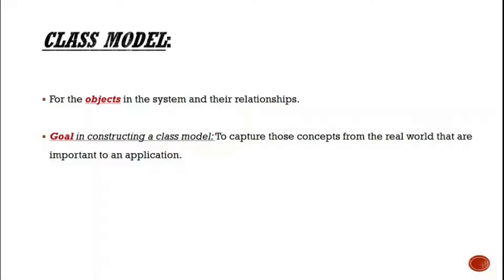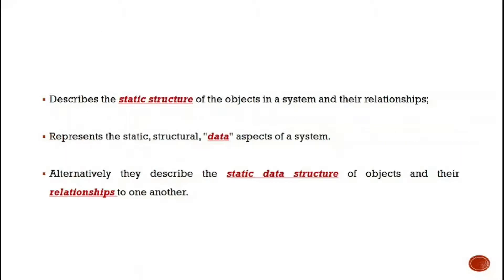The class model covers the objects in the system and their relationships. Class models are used to represent relationships between objects in the system. The goal of constructing a class model is to capture the concepts from the real world that are important to an application. It describes the static structure of the objects in a system and their relationships.